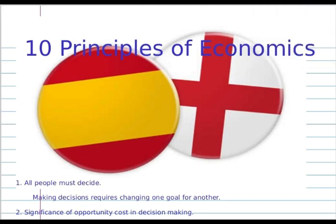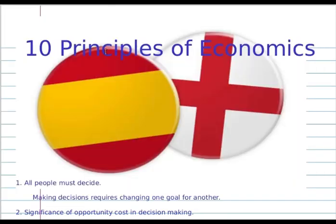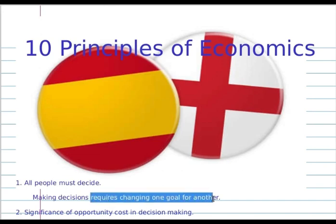The first principle is: all people must decide. Making decisions requires changing one goal for another. For example, if you are driving your car or walking on a road and in front of you appear two new directions, you must choose one of them — and for this reason, as you see, it requires changing one goal for another.